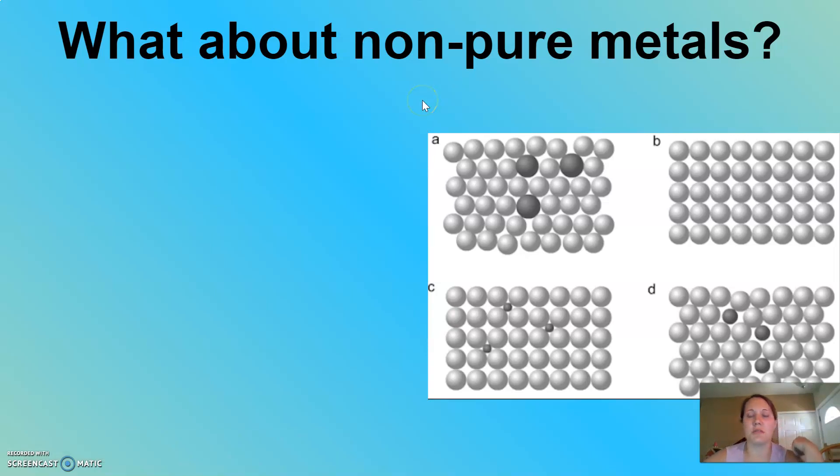So in the last video, we talked about pure metals, metals that are made of the same type of atom and that sea of electrons that is formed around the cations.